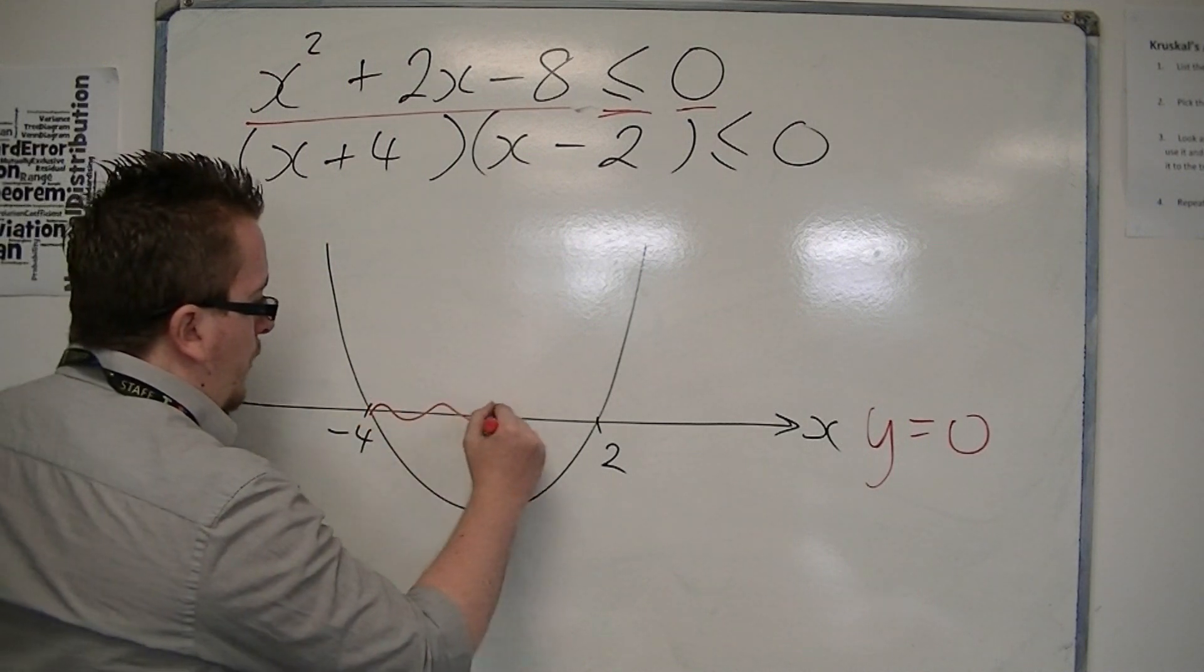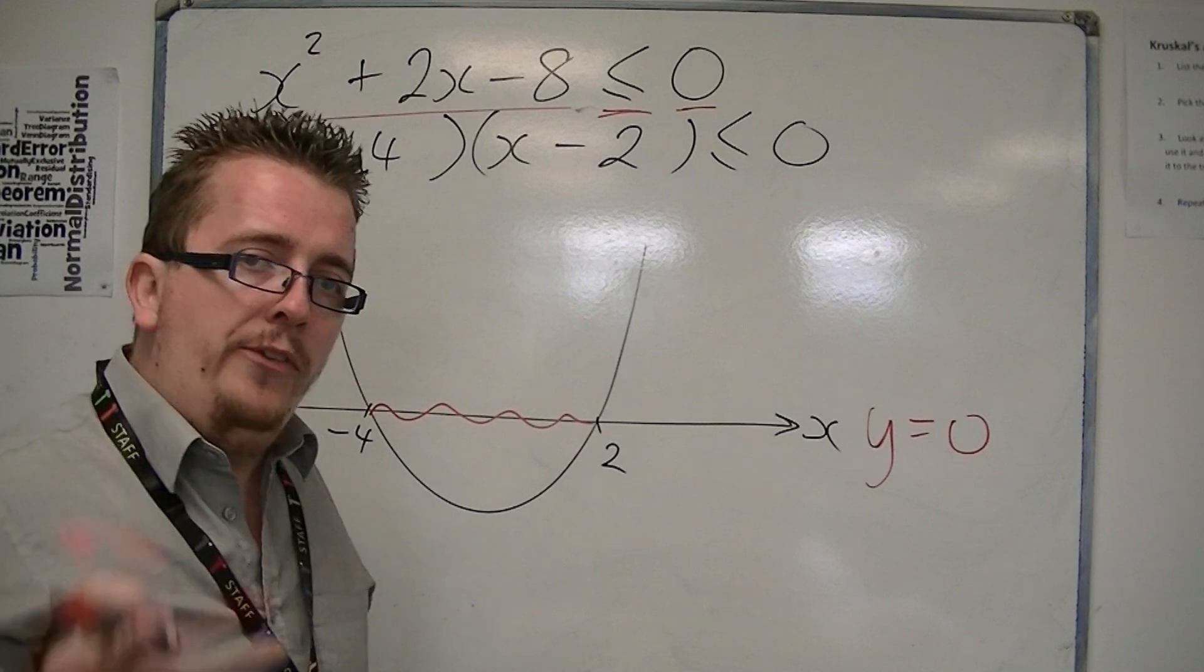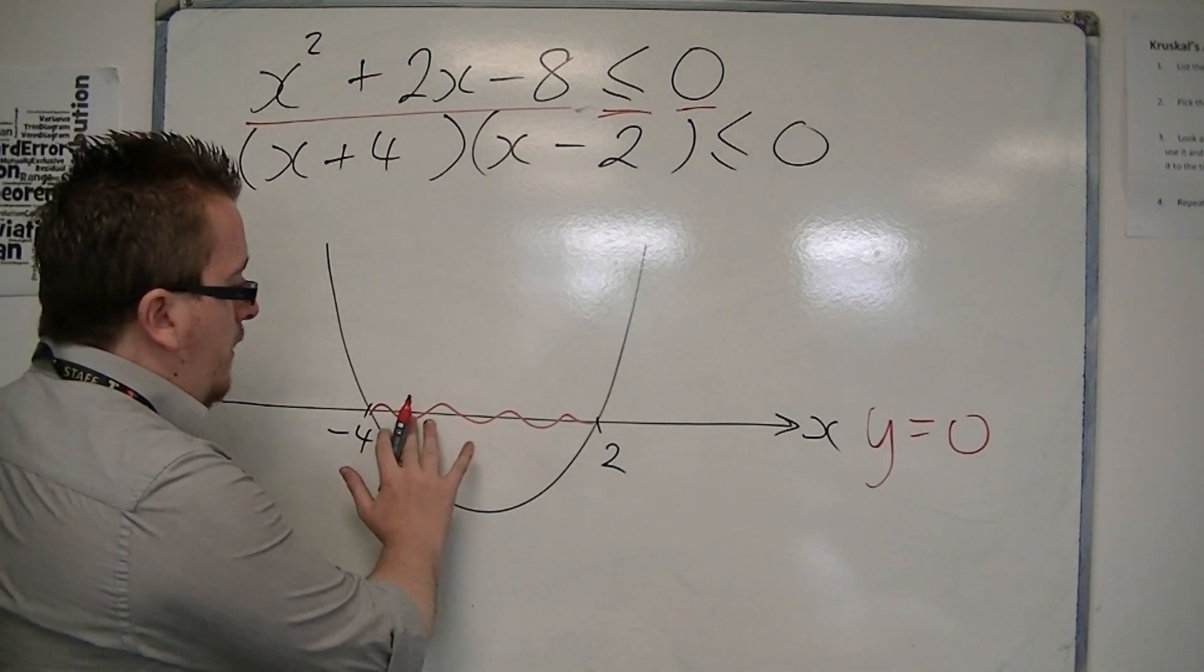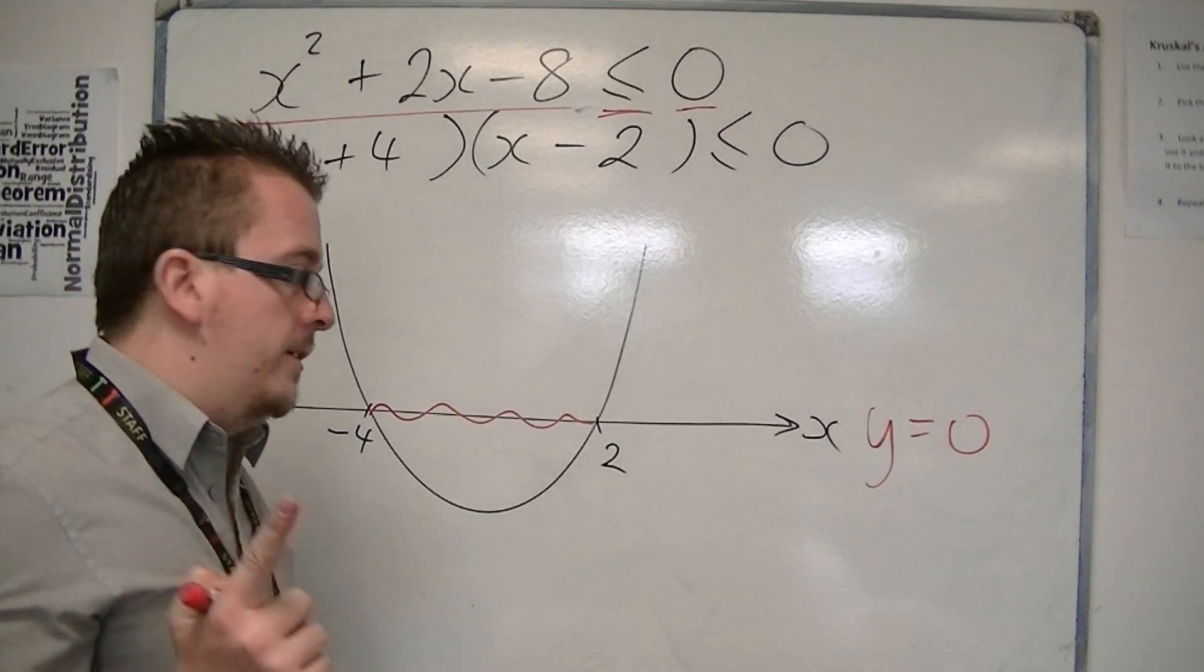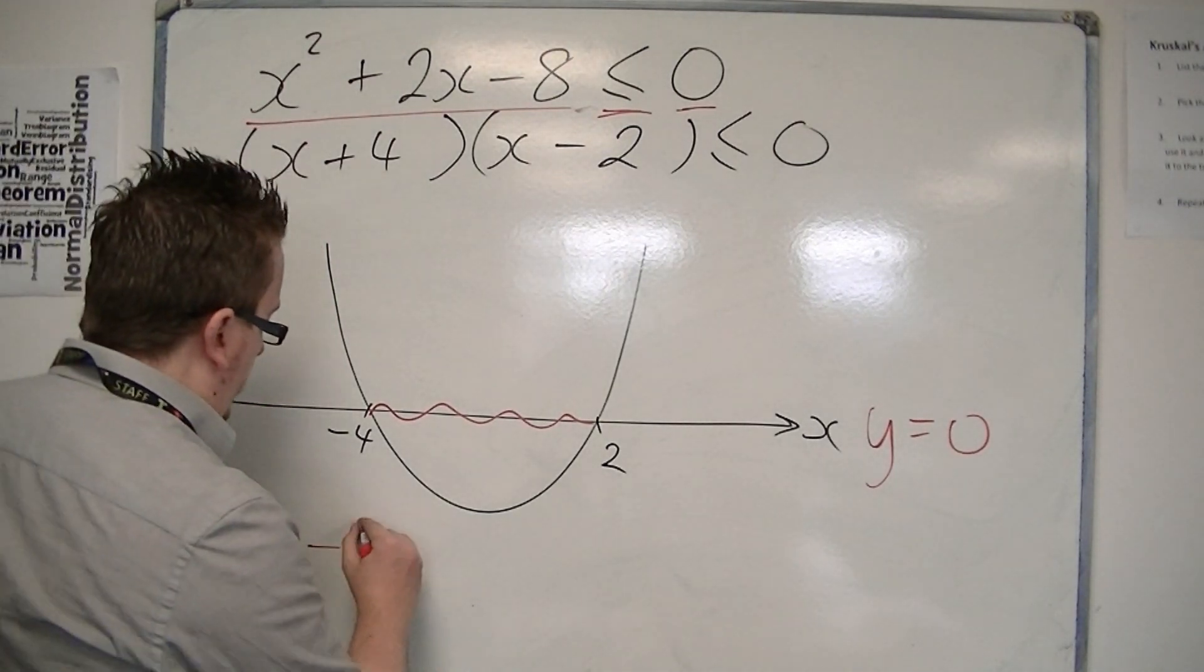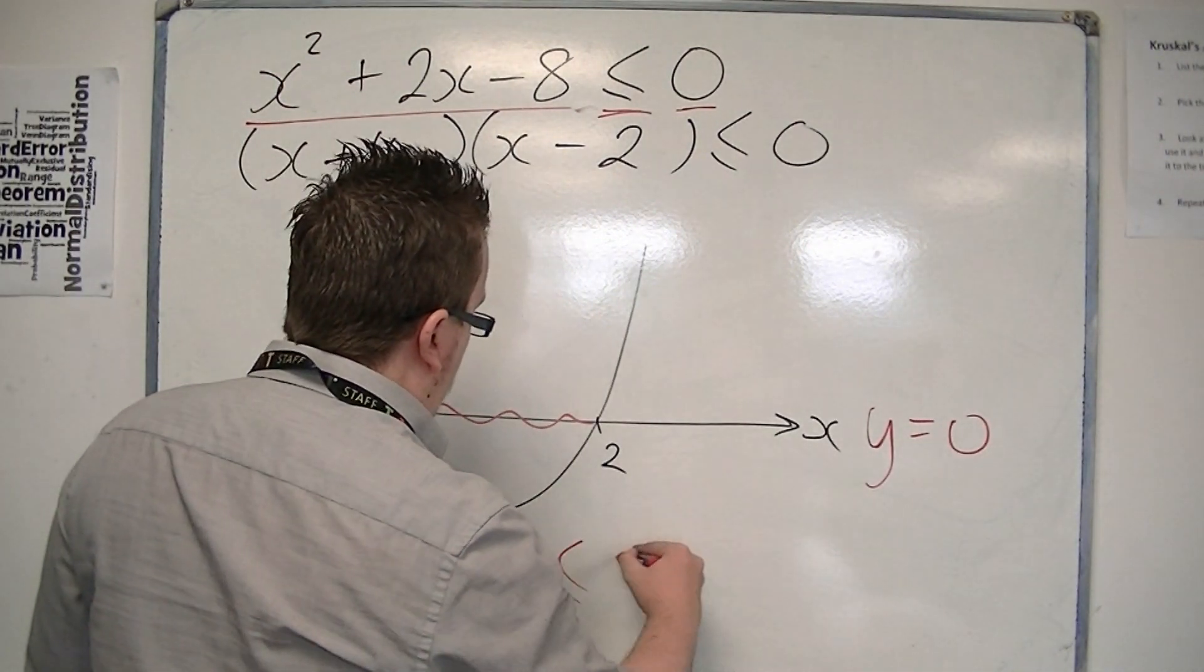So it is below between minus 4 and 2. And because there is one region, I can represent it with one inequality. And I can represent that inequality as minus 4 is less than or equal to x is less than or equal to 2.